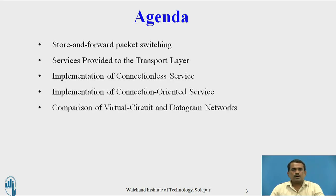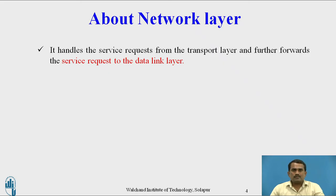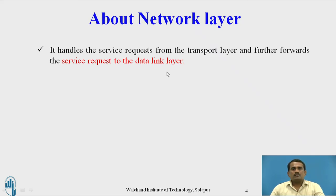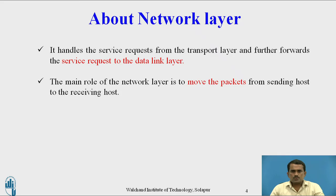Now let us see store and forward packet switching. The network layer is the fourth layer of the OSI reference model. The user can send data in the form of packets from one station to another. It handles service requests from the transport layer and forwards them to the data link layer. The main role of the network layer is to move packets from the sending host to the receiving host.